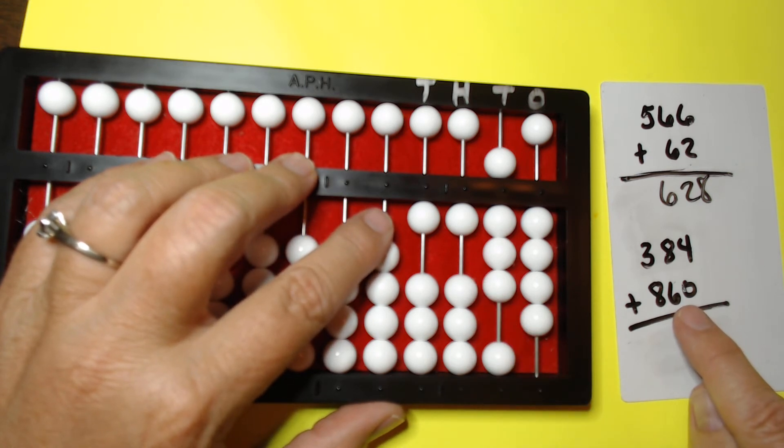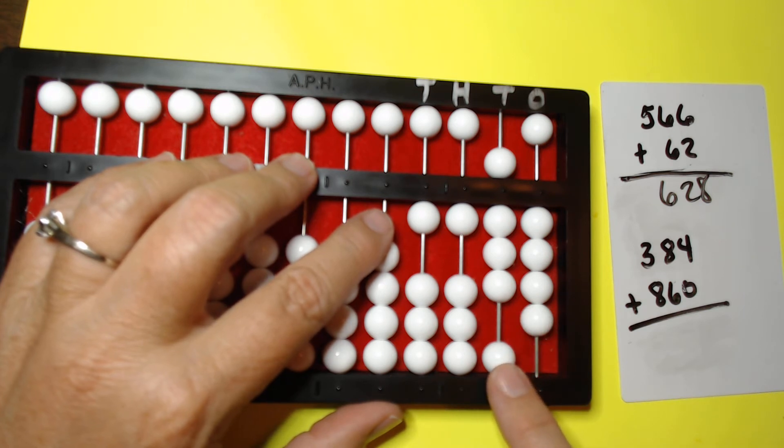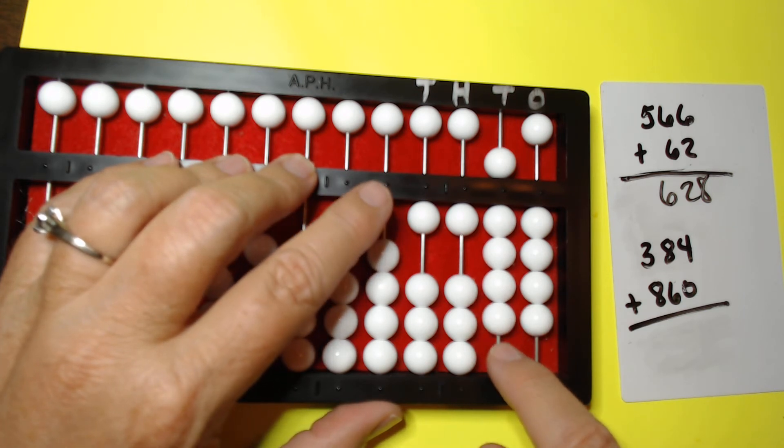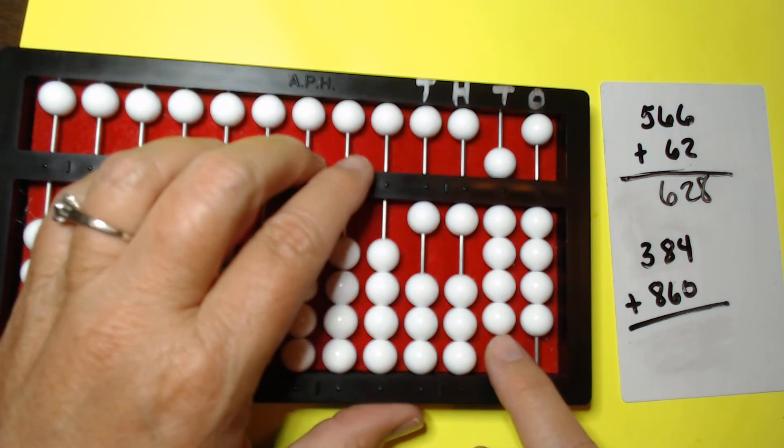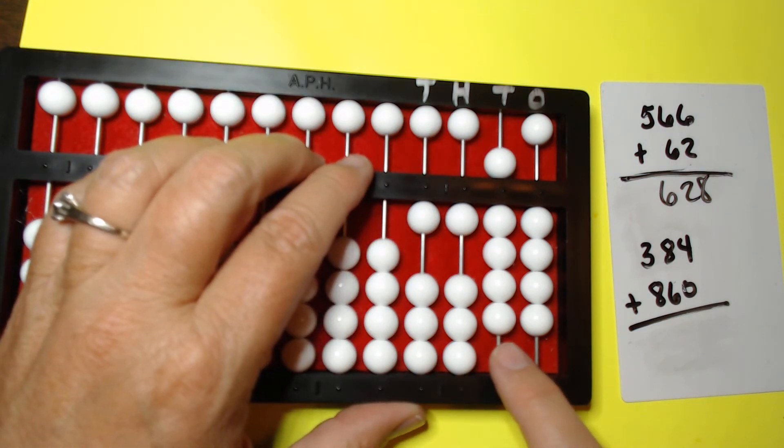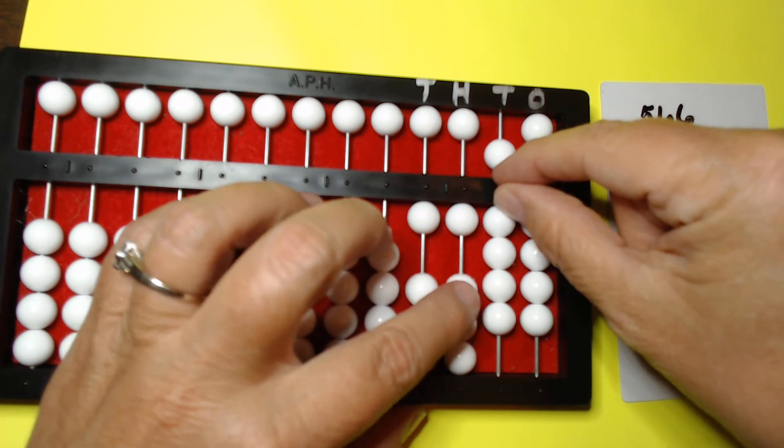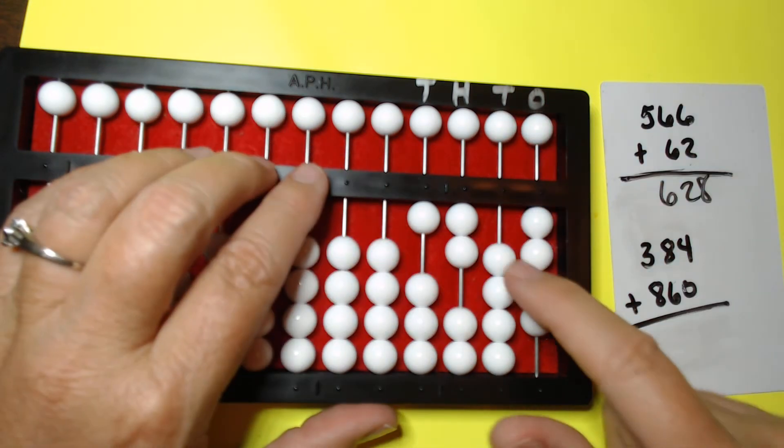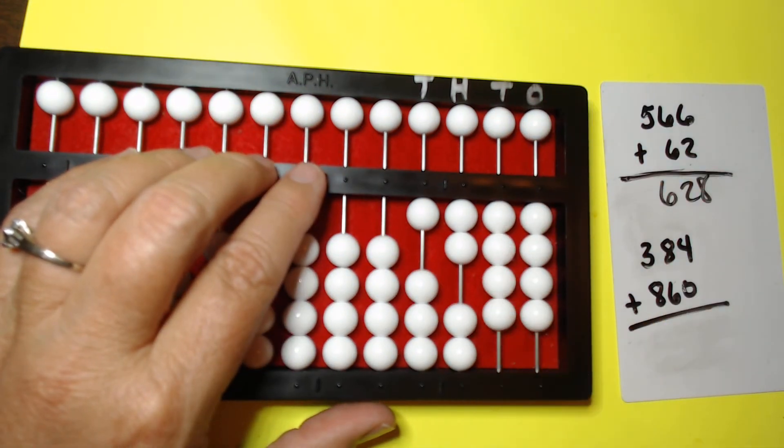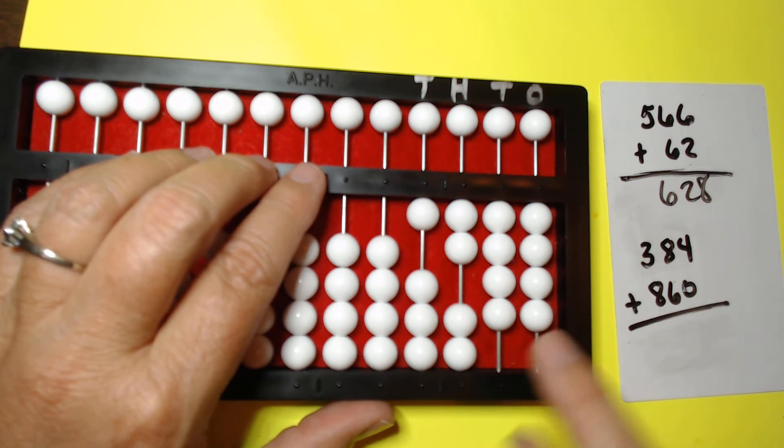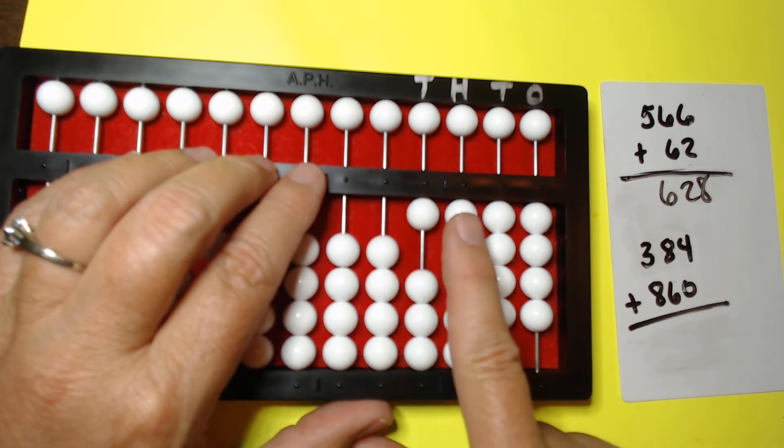Now we're going to set 60. So in the tens column we're going to set 6. Okay. 1. We're already out of beads because the 5 bead is already down. So we have to get to 6. So there was 1. Make this 6 change. 2, 3, 4, 5, 6. And then 0. We won't add anything there. So our answer is 1,244.